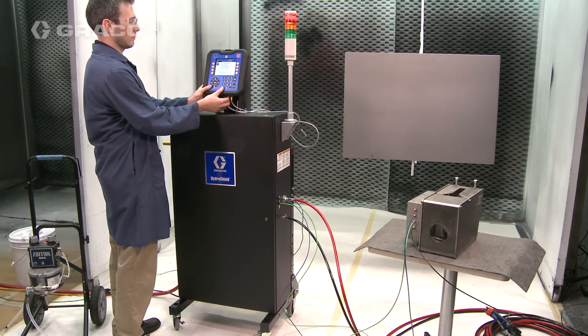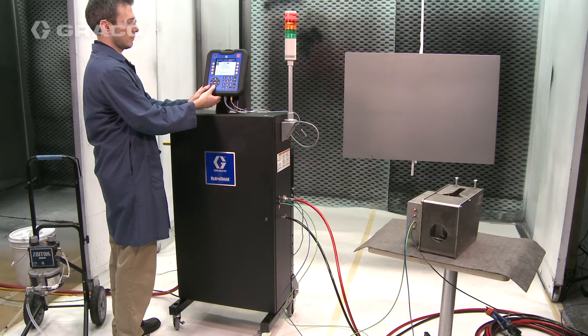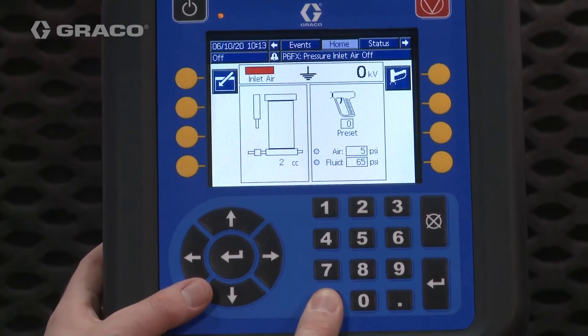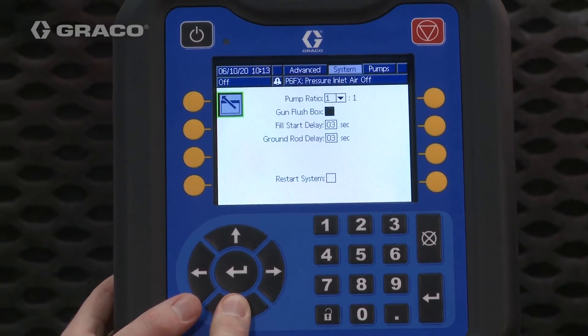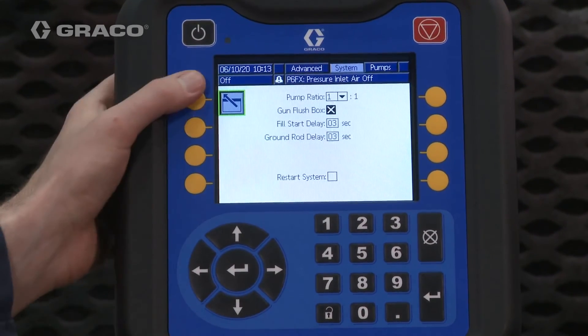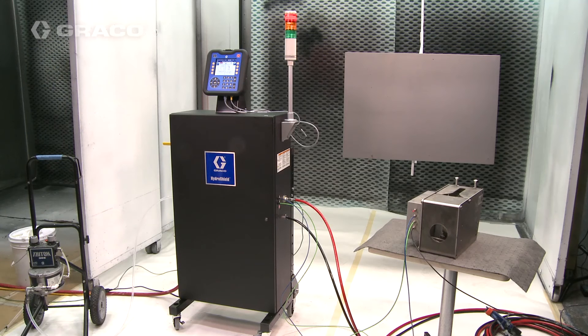Using the control interface, unlock the setup menus by pressing setup. Navigate to the system menu, press enter screen, and use the arrows to navigate to check the gun flush box field.